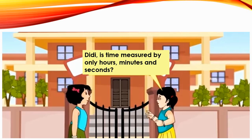First, let us talk about hours. What are hours? 60 minutes is equal to 1 hour. Now, what about minutes? 60 seconds is equal to 1 minute. And now let's talk about seconds. Students, if you see the clock between two numbers, for example 12 to 1, there are 5 small parts. Each part is equal to 1 second. That part is known as seconds.